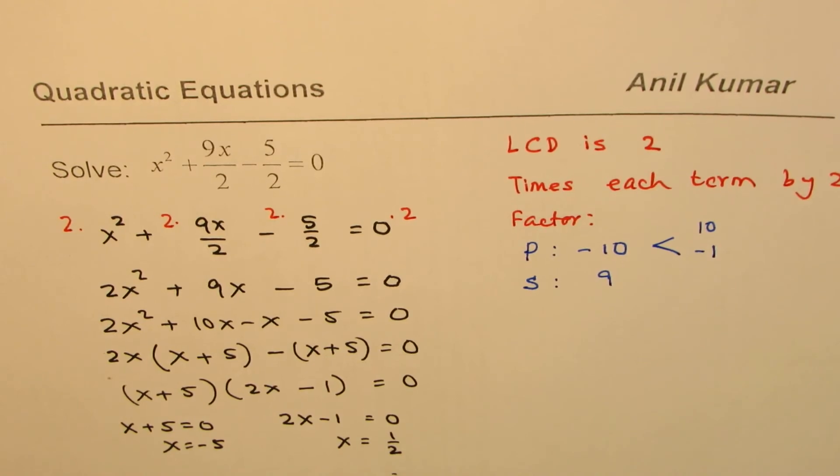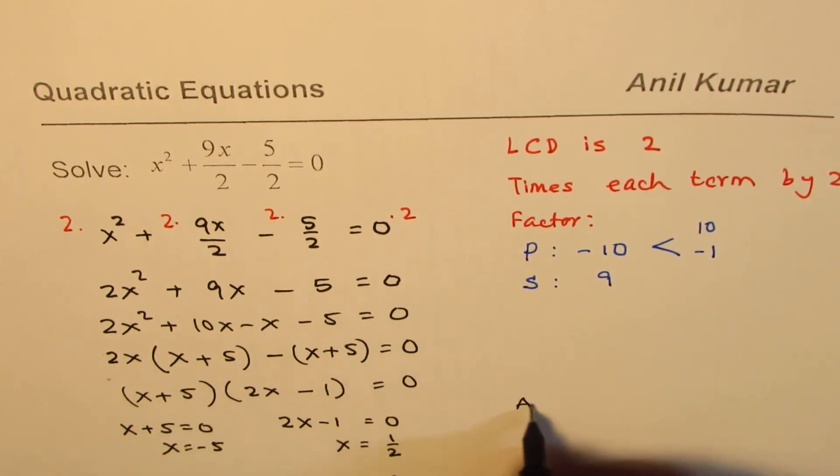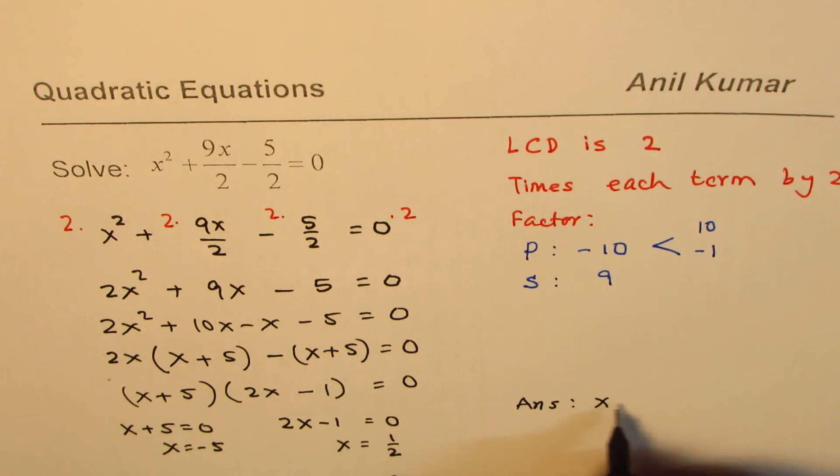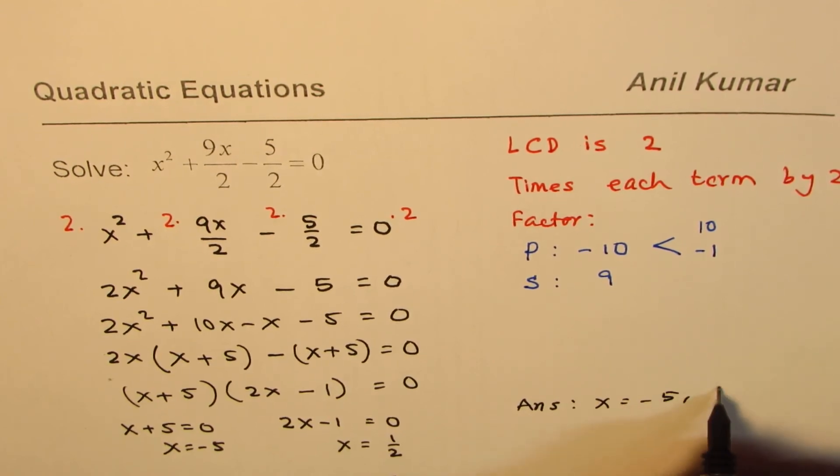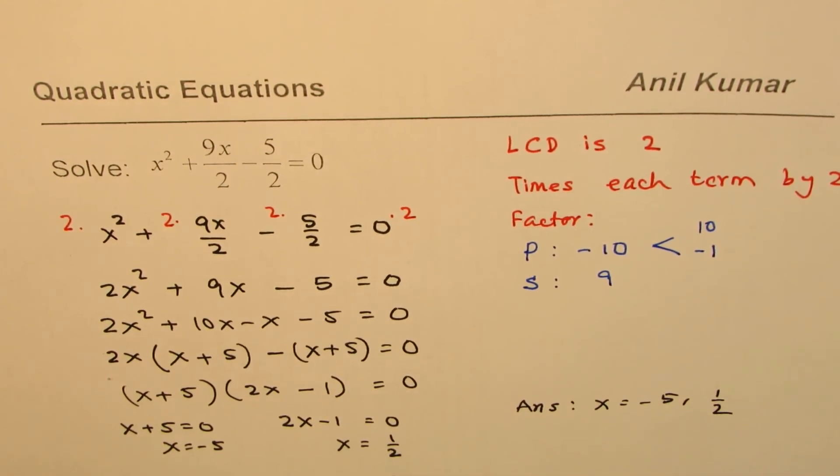These are the solutions for the given equation. We can write our answer as x = -5 or x = 1/2. You can always substitute these values and check if they are valid solutions for the given quadratic equation.